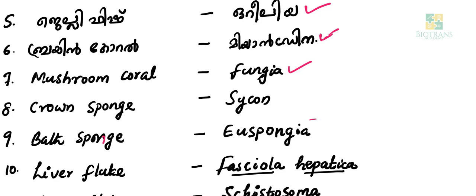Crown Sponge is Sycon. Fungia is the Mushroom Coral.